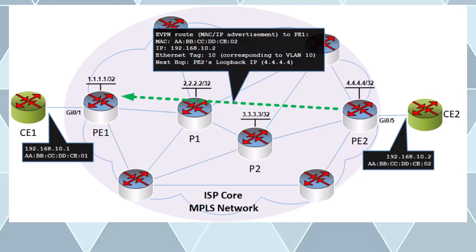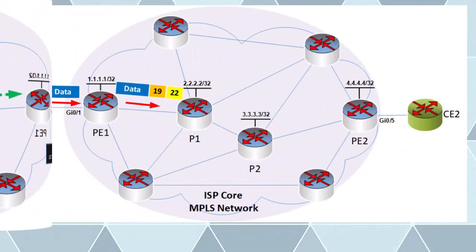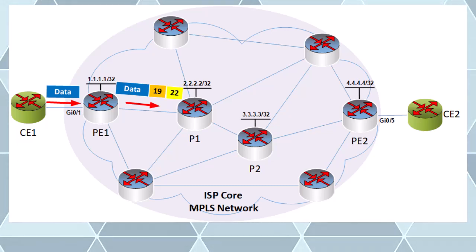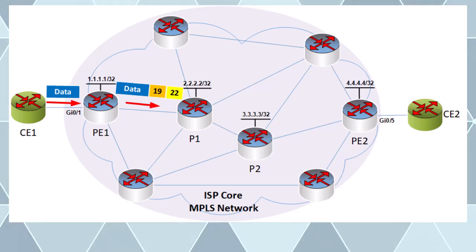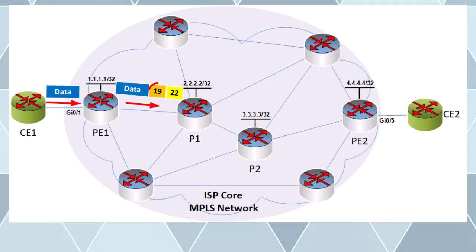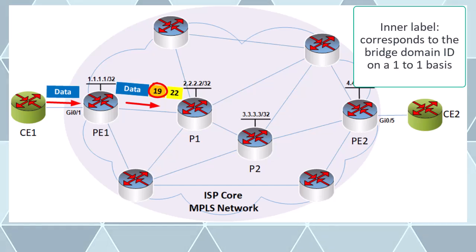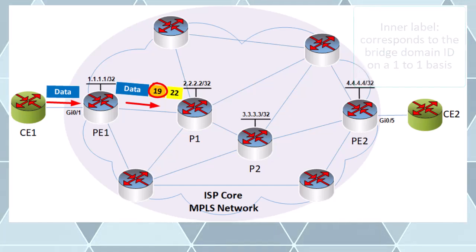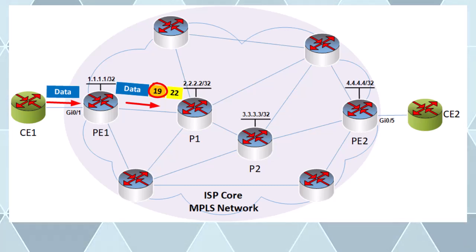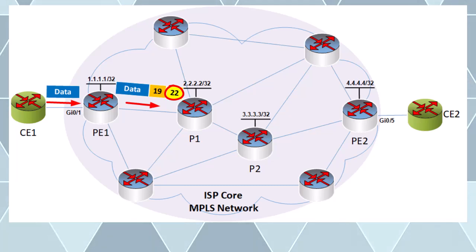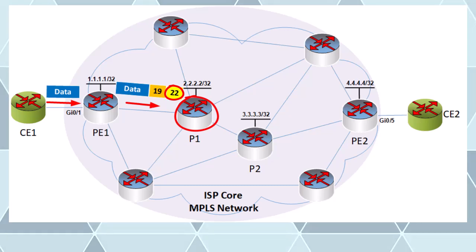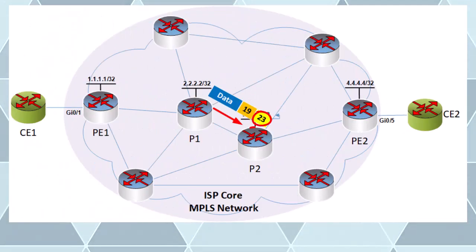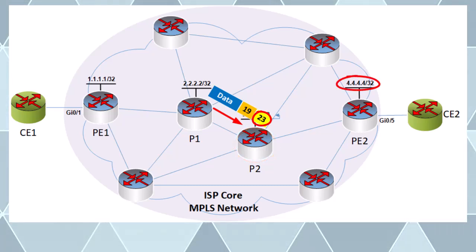Now that the MPBGP EVPN tables are complete, let's look at the data plane. When CE1 sends a data packet to CE2 it arrives at PE1 and is encapsulated using MPLS. Using information stored in the MPBGP EVPN table, PE1 pushes two labels onto that frame. The inner label corresponds to the bridge domain ID — here a value of 19 was chosen by LDP for that bridge domain. A second outer transport label is then pushed corresponding to the next-hop P router toward destination 4.4.4.4 which is PE2. Both labels are pushed and the frame is sent; P1 receives the frame, swaps the outer label and sends it to P2 with the appropriate label for the next hop destination of PE2.